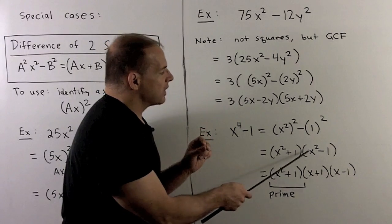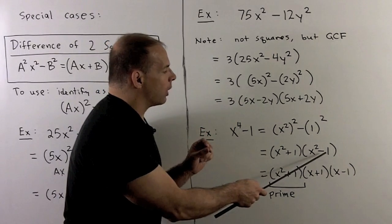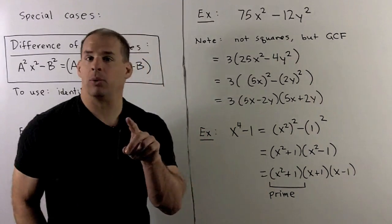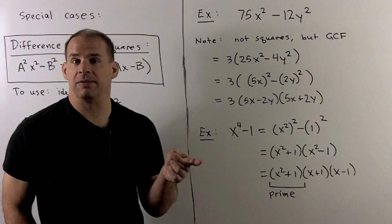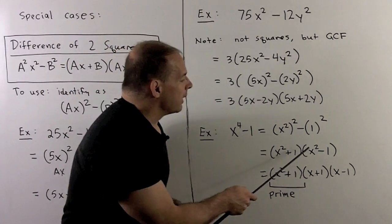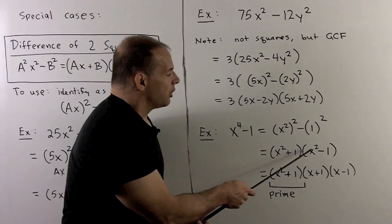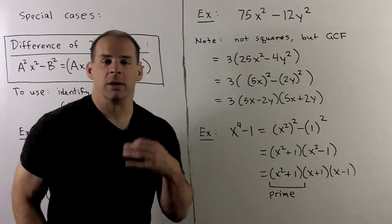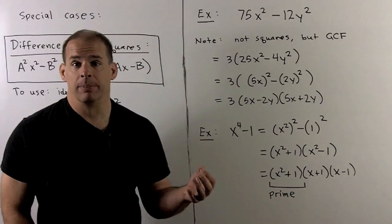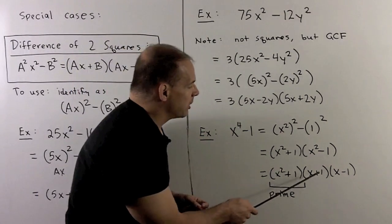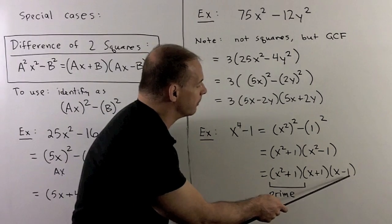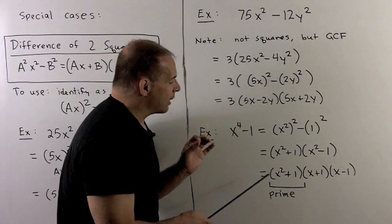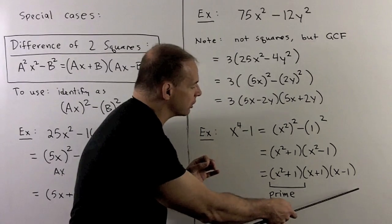We get (x² + 1)(x² − 1). The x² + 1 cannot be factored any further. For x² − 1, we note we have x² and 1², so we can apply difference of two squares again, factoring it into (x + 1)(x − 1). So x⁴ − 1 factors completely into three factors: (x² + 1)(x + 1)(x − 1).